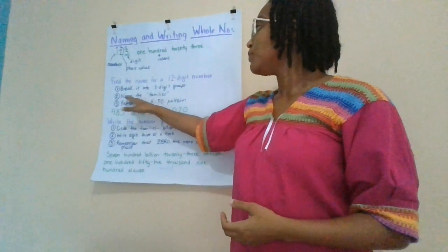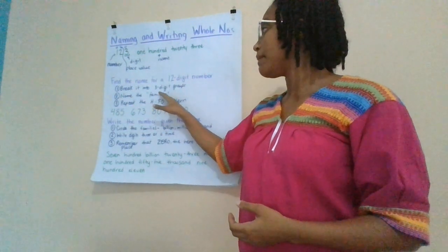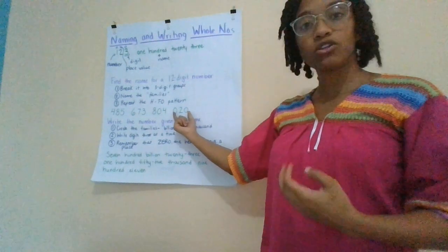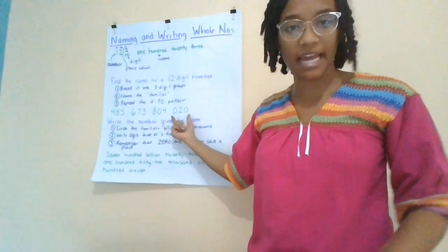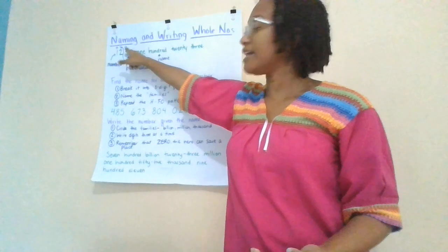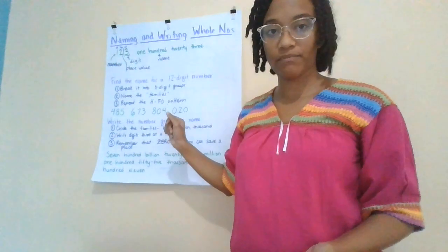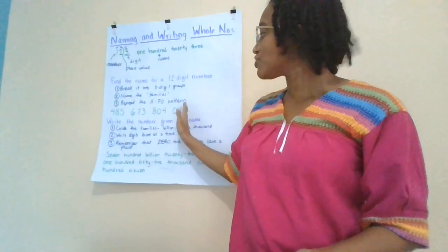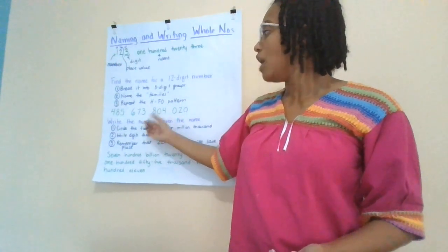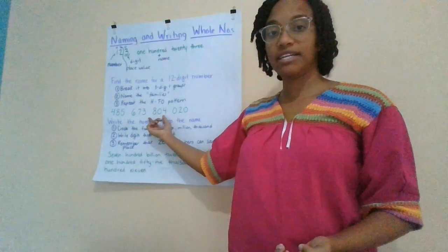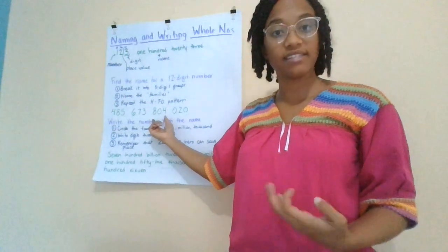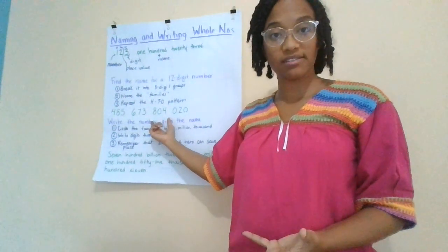Then we need to name the families. The family closest to the right doesn't actually have a name — it's our normal hundreds, tens, ones pattern. But as soon as we move on from 100, our next family name is 1,000. This is the thousands.